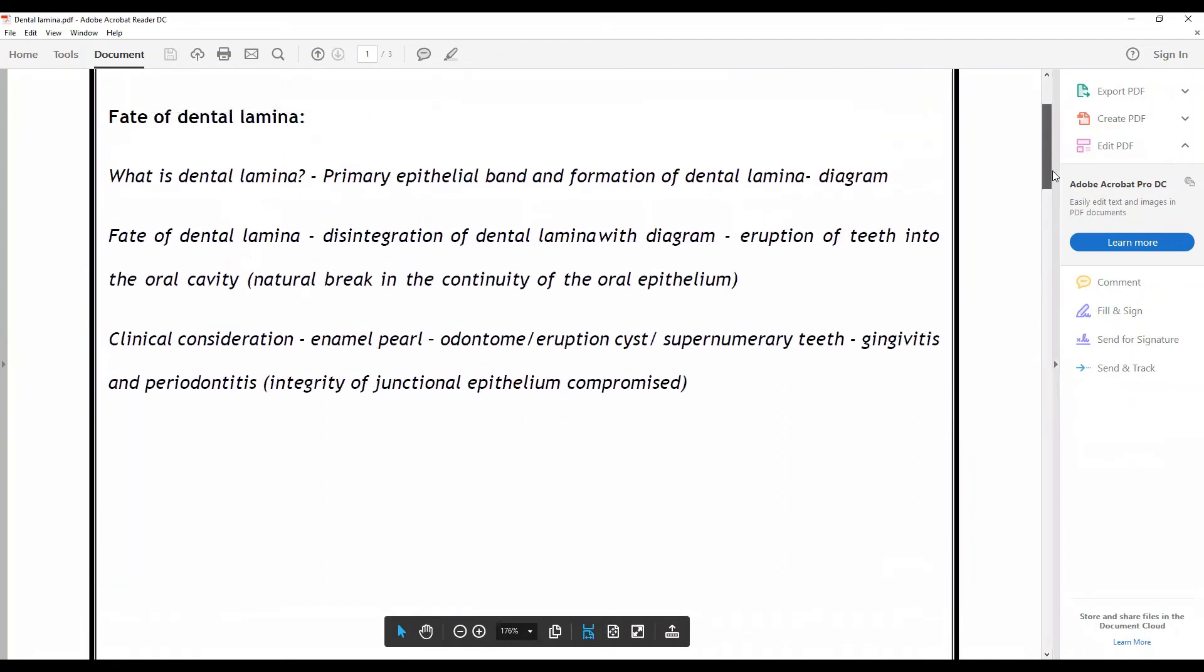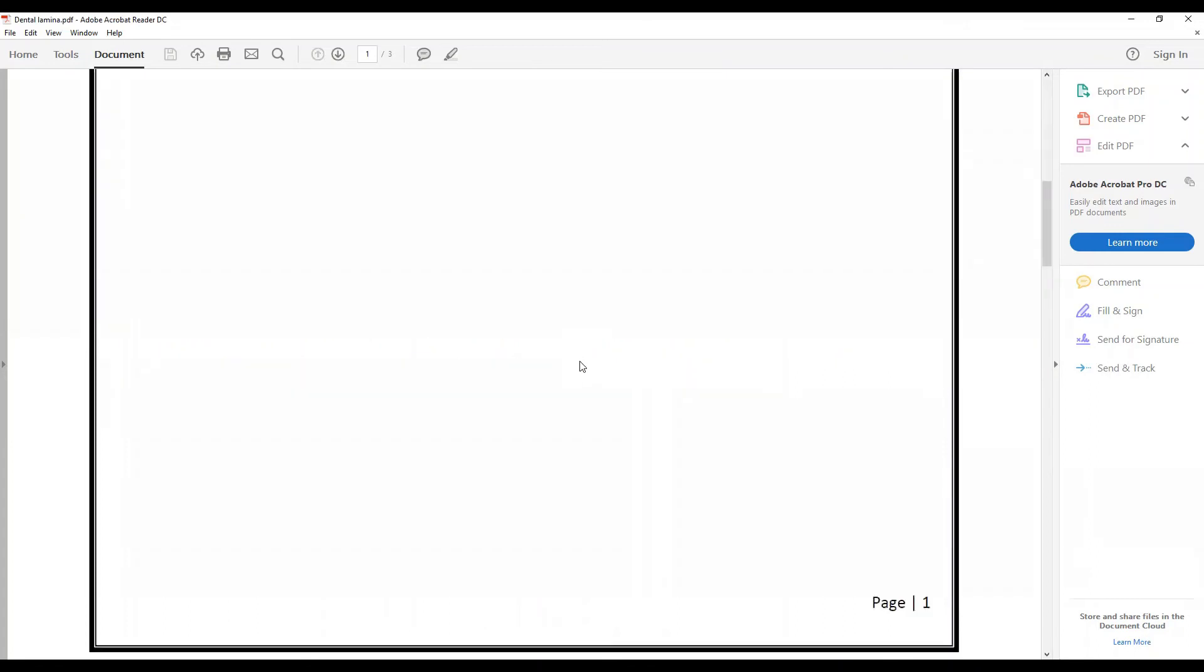So this is what is about dental lamina: how primary epithelial band forms about fourth to seventh week, sixth week formation of dental lamina with diagram, fate of dental lamina, disintegration, and how it contributes to all these issues.